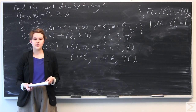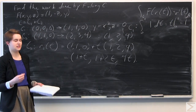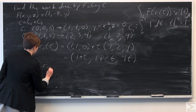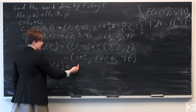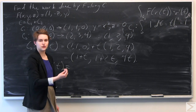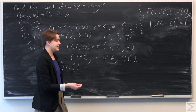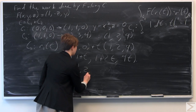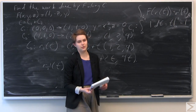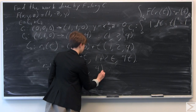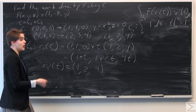Differentiating R2 of T with respect to T: the derivative of the first component is 1, the second is 2, and the third is 4. So R2 prime of T equals (1, 2, 4).